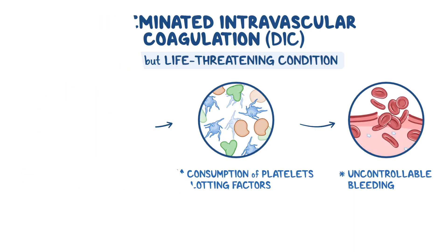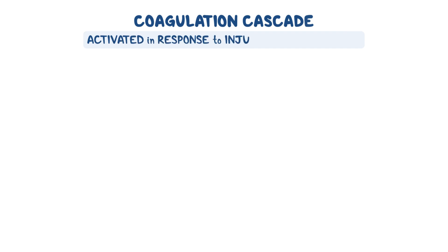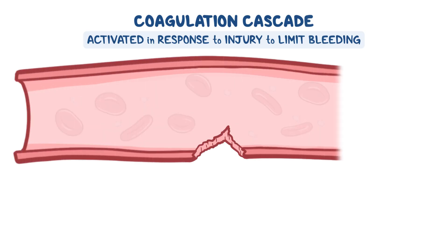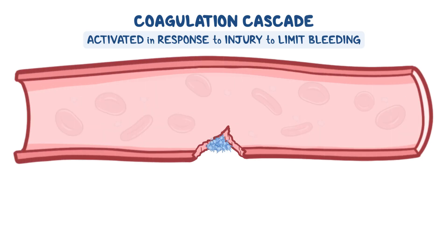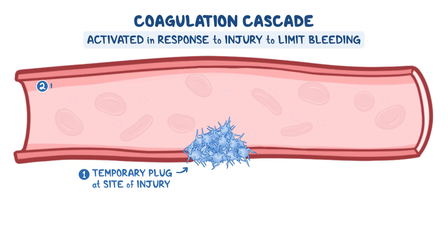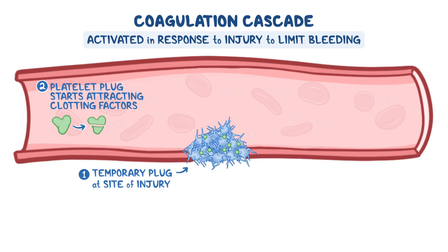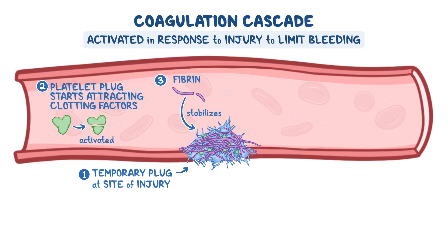Let's quickly review the physiology of clotting, also known as the coagulation cascade, which is activated in response to an injury to limit the bleeding. Normally, when a tissue and its blood vessels are injured, the circulating platelets are activated locally and aggregate to form a temporary plug at the site of injury. The platelet plug then starts attracting circulating clotting factors, which starts off the coagulation cascade, ultimately resulting in the formation of fibrin, which in turn builds a tightly connected mesh that stabilizes the platelet plug.